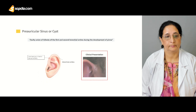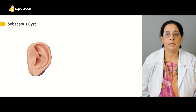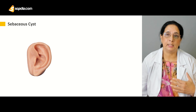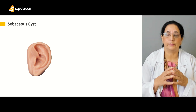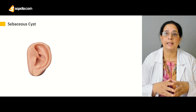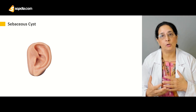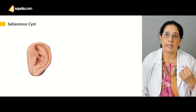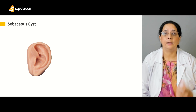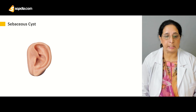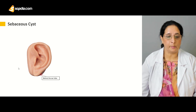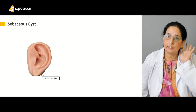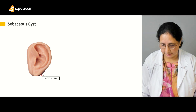The next important benign tumor of the auricle is the sebaceous cyst. These are cysts which develop from the sebaceous glands — glands that produce oil. The cysts are swellings filled with oily secretions. They are very commonly present behind the ear lobe.